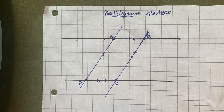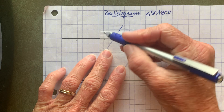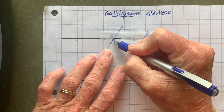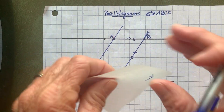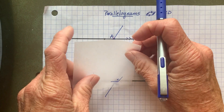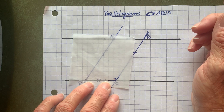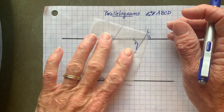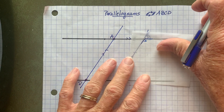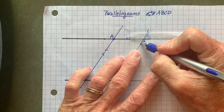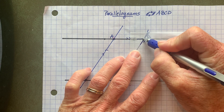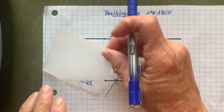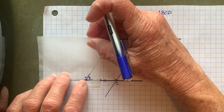Let's look at the angles for a moment. If I take my tracing paper and I trace angle A, I can bring it across to the opposite angle. And you can see that A and C are congruent to each other. If I trace angle B — here's one side of B and here's the other — B is opposite D. Let's just verify that B and D are congruent to one another, and they are.